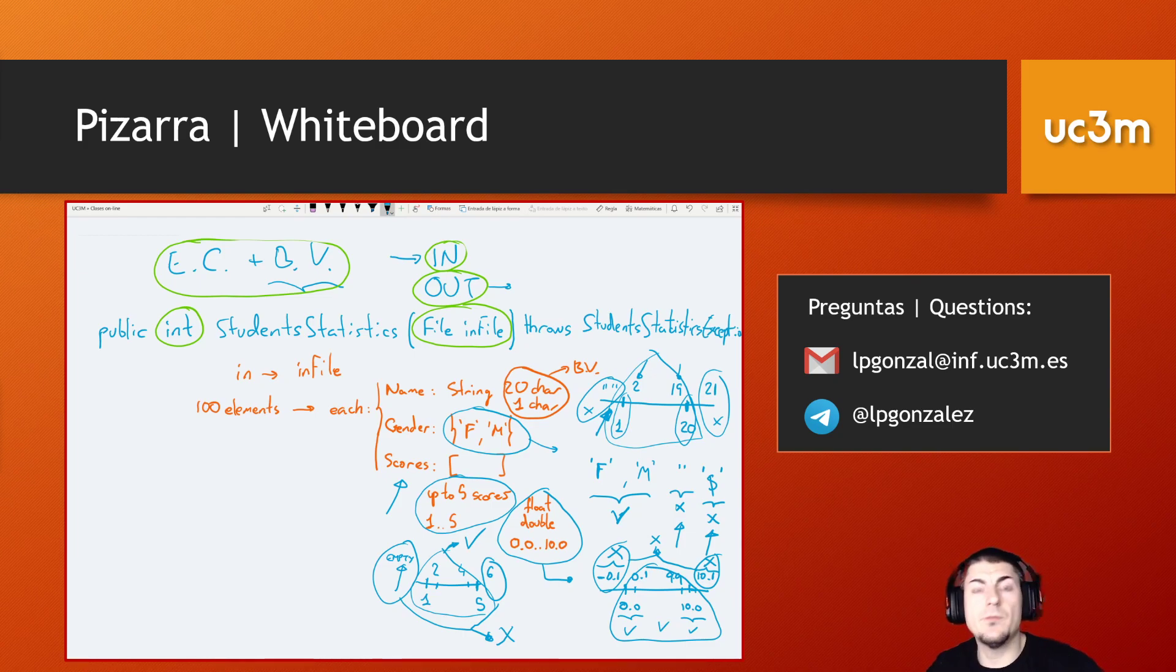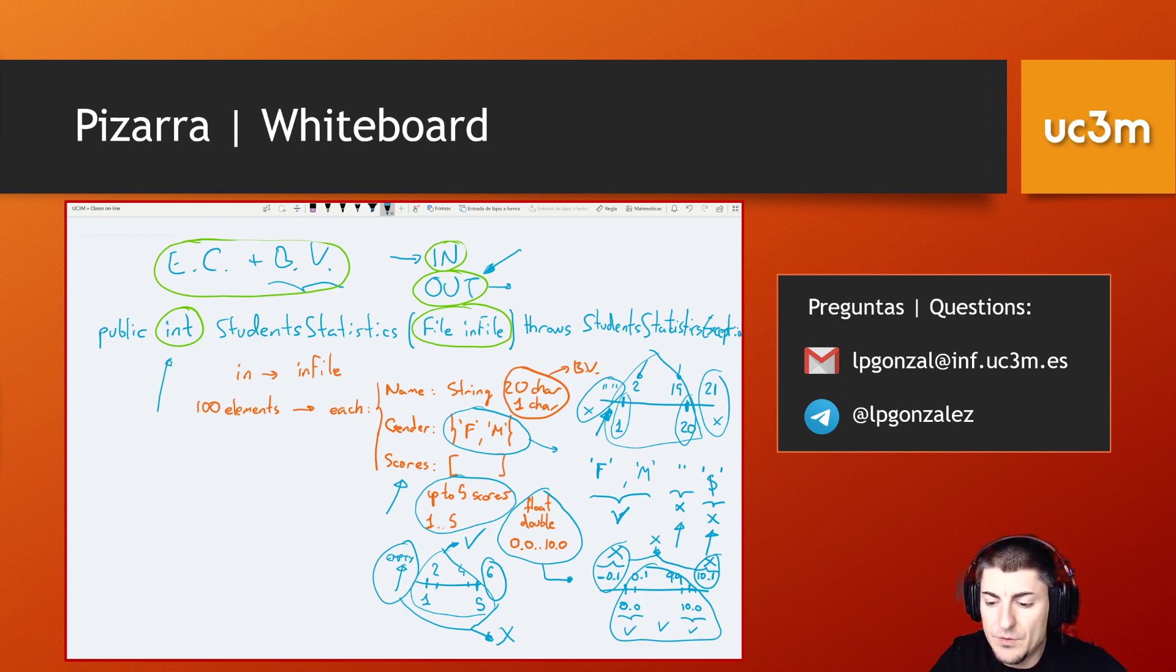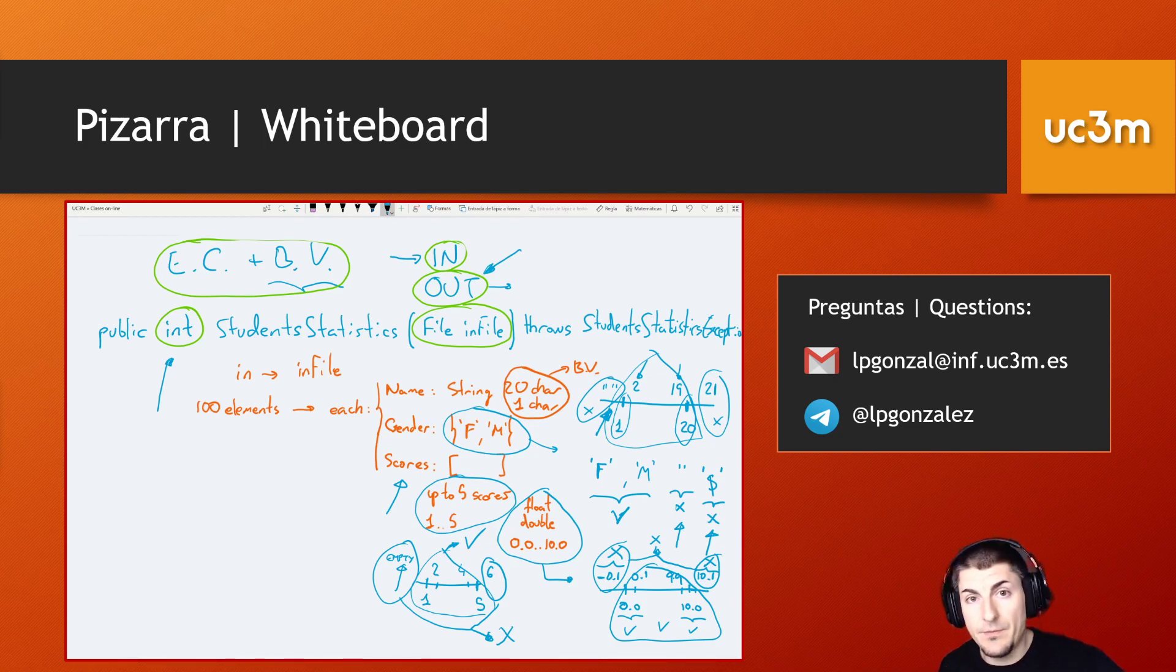With this we have full coverage of the input. Now remember, this method applies as well to the output. So we should have multiple input files, not just to test the different invalid cases and the valid cases, but also to check conditions that apply to valid outputs.